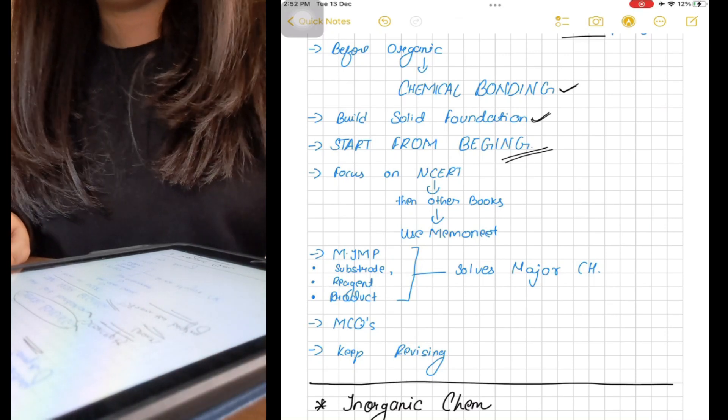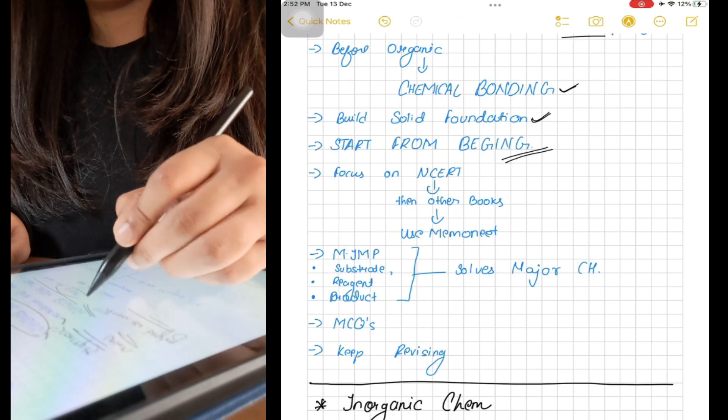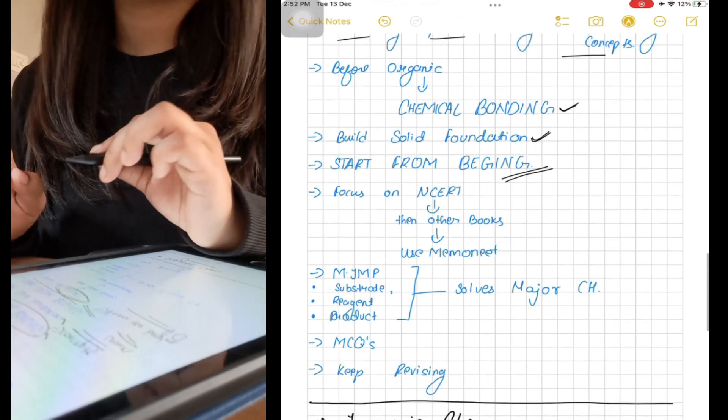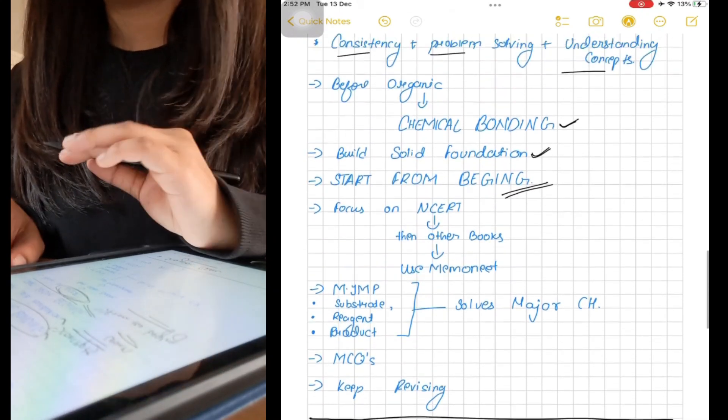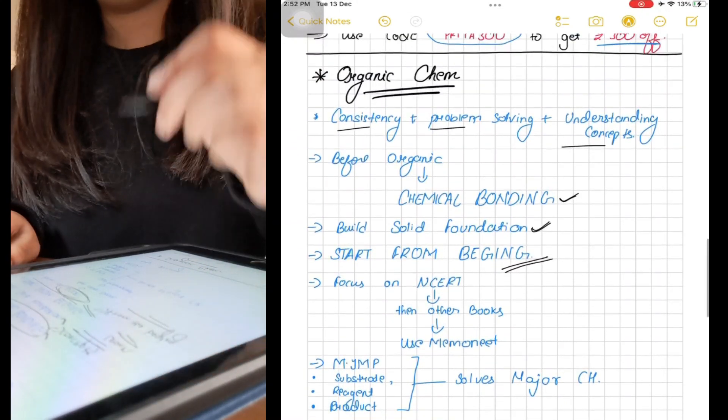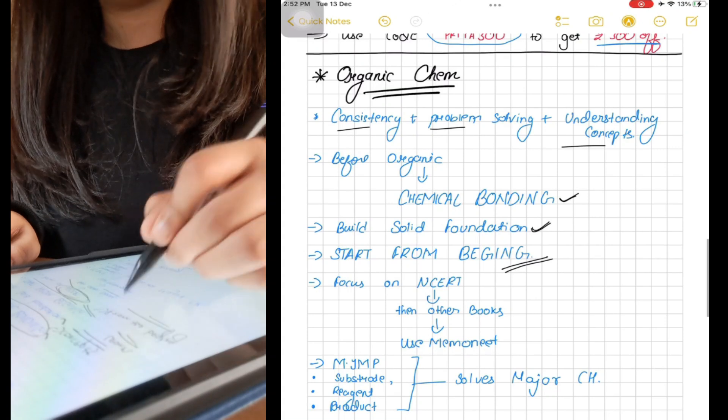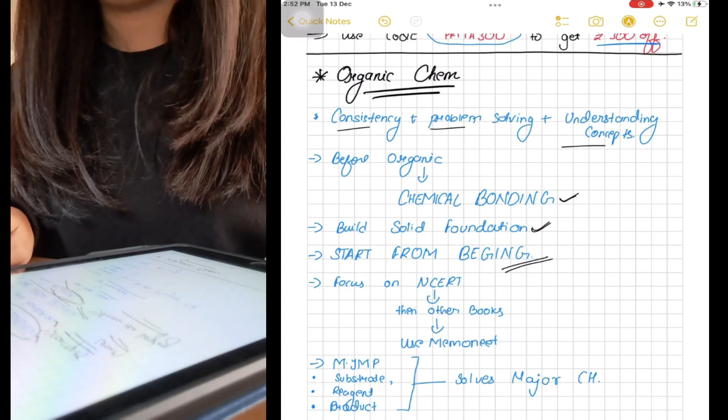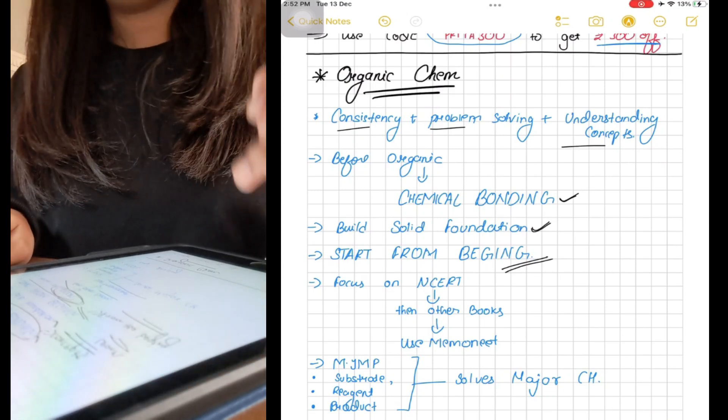Before you start referring to any other book or solving questions, you can use the Memo NEET app for revision and quick flashcards. The most important thing to remember is substrate, reagent, and product - this solves all the major chapters. Once your basics are clear, everything is just factual and easy to understand.